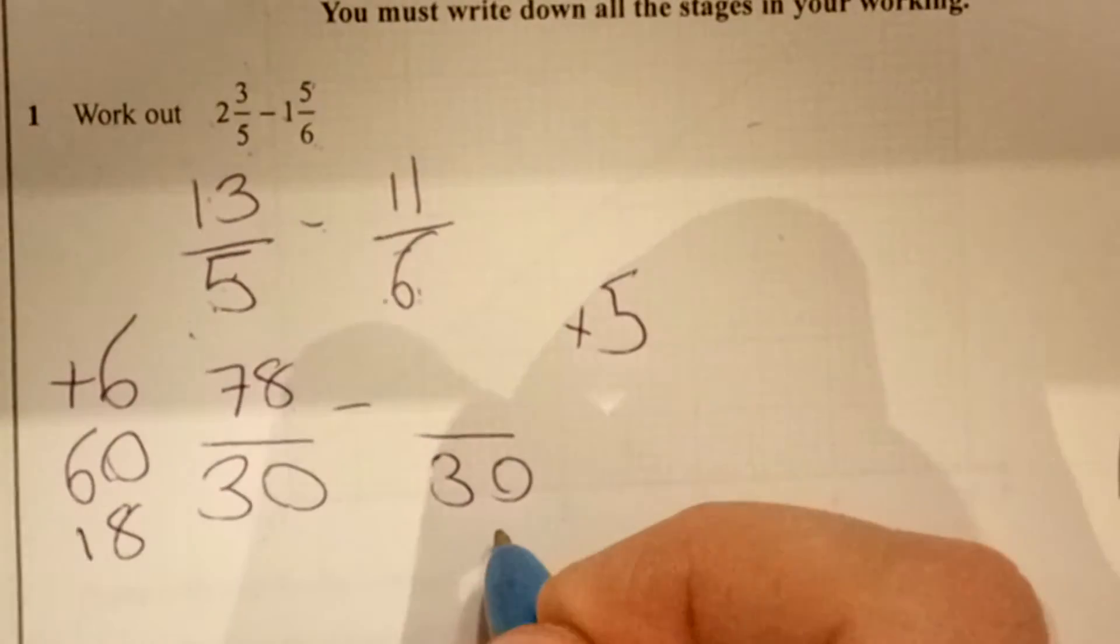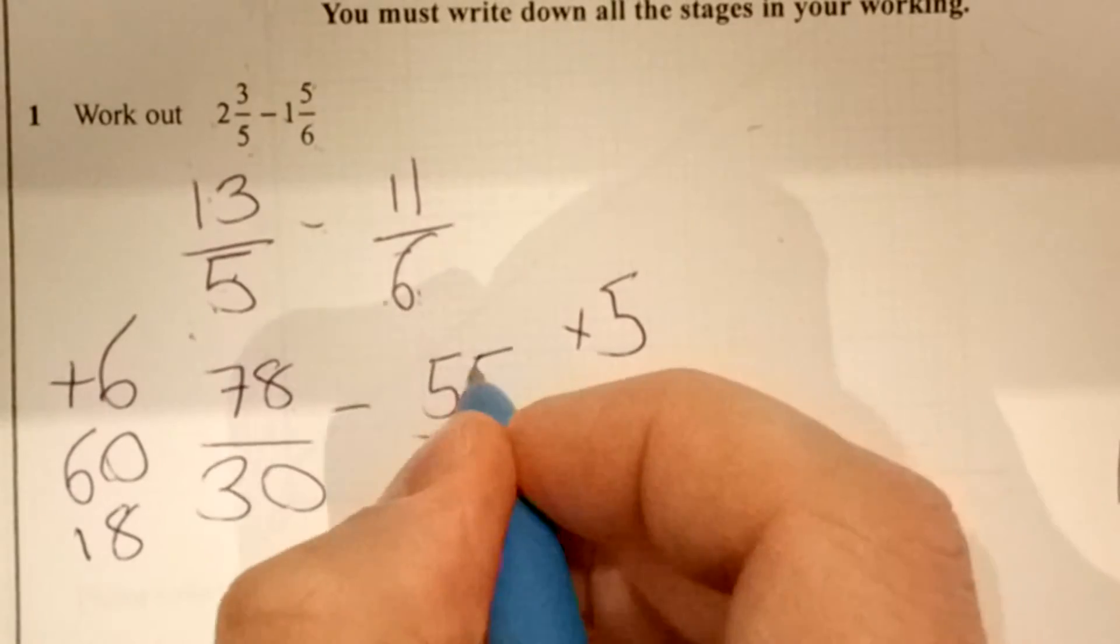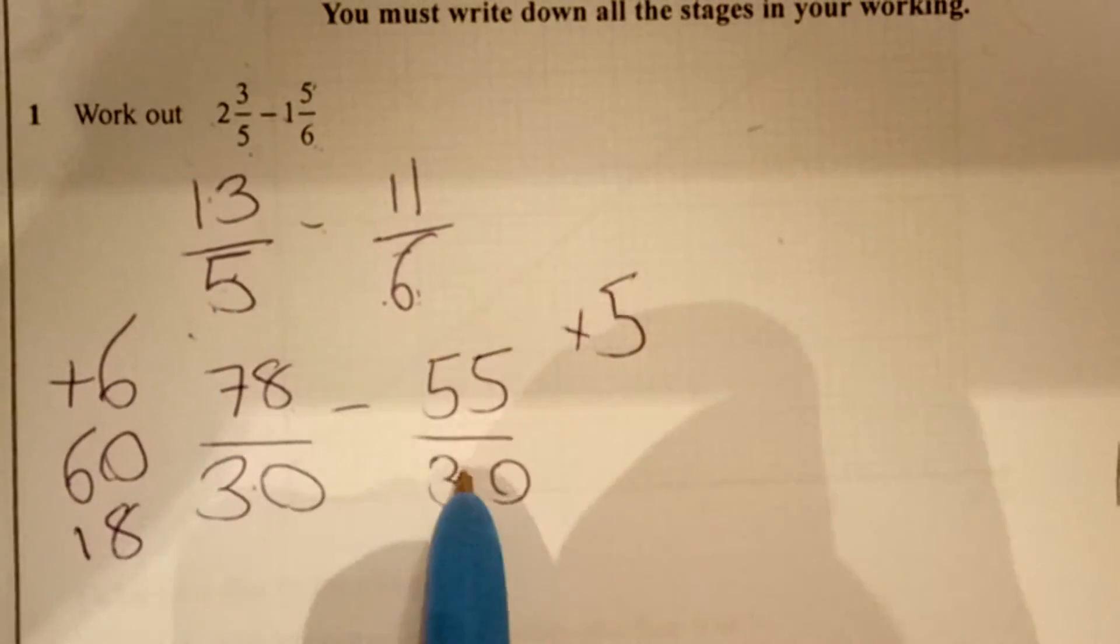6 times 5 is 30, so you'll do 11 times 5 which is 55. Now our denominators are the same which